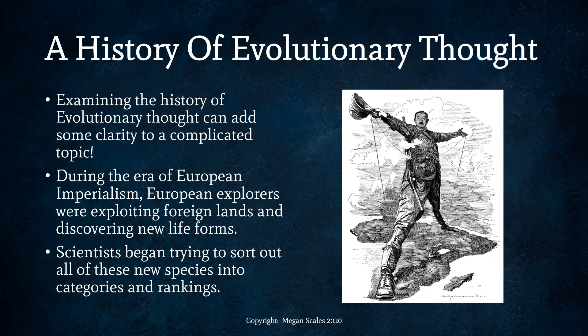During the era of European imperialism, explorers were exploiting foreign lands and discovering new life forms — different organisms or animals that they had not seen before. Scientists began trying to sort out all of these new species into different categories and rankings.